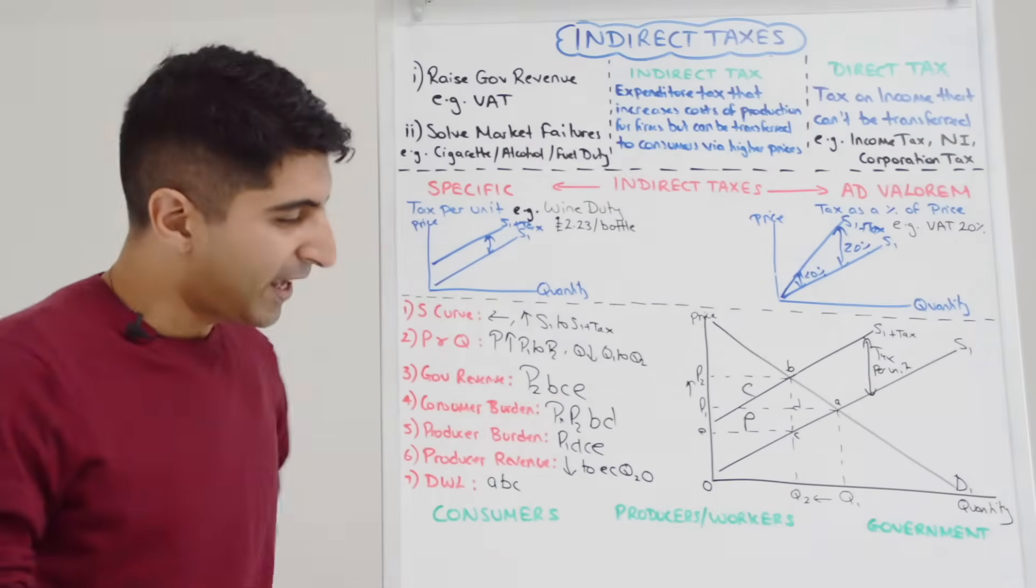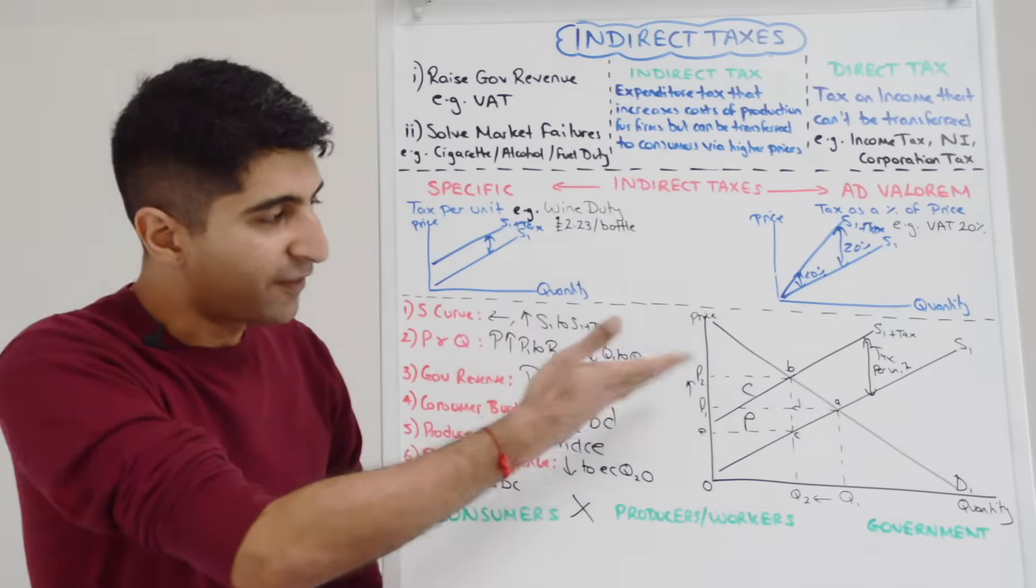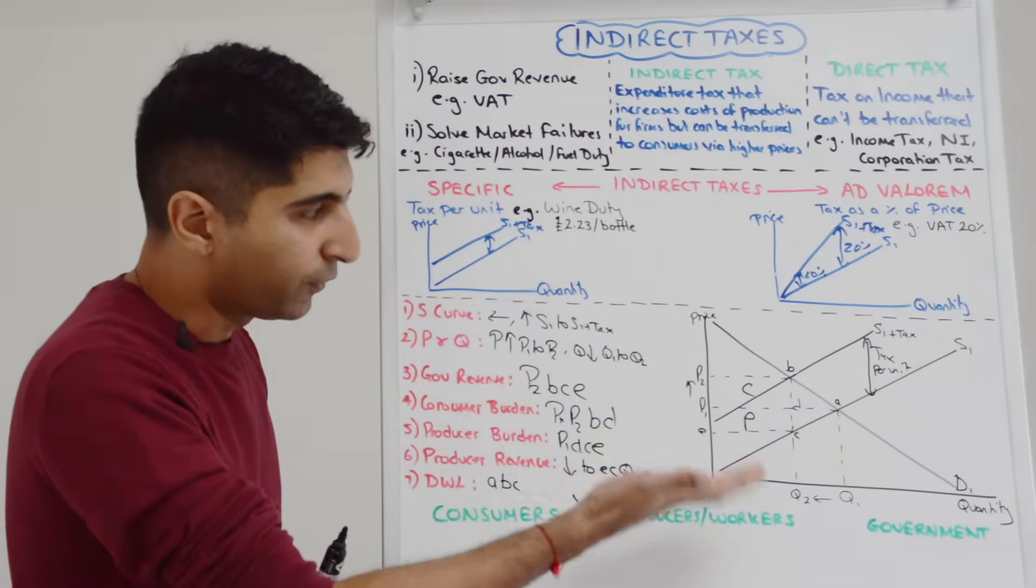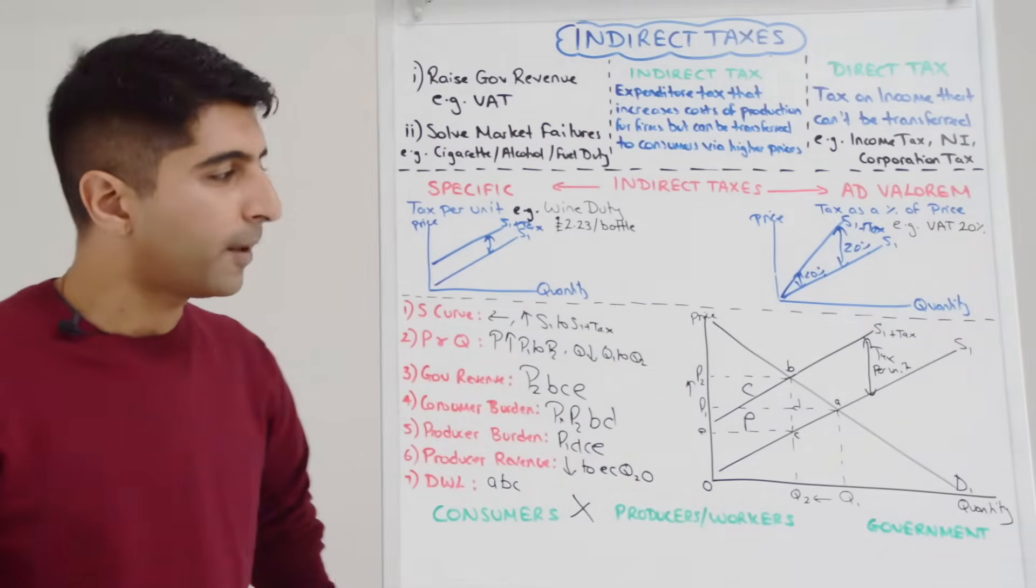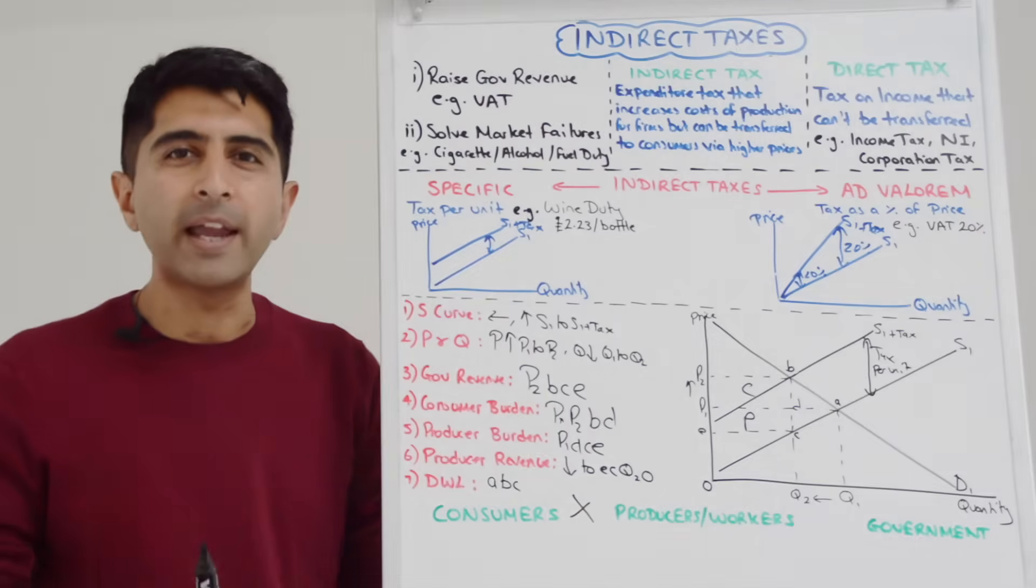Let's see overall the impact on key stakeholders. Well it's very clear that consumers will not like indirect taxes, and we can see from the impacts why. Indirect taxes raise price, they will lower consumer surplus, lower quantity and lower choice. Consumers are burdened by indirect taxes.